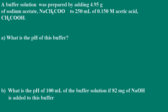Hi. Welcome to Pathways to Chemistry. This is Dr. O'Connor. Here we have another buffer problem. We're told the buffer solution was prepared by adding 4.95 grams of sodium acetate to 250 milliliters of 0.15 molar acetic acid. We're asked: what is the pH of this buffer?